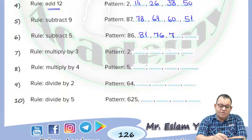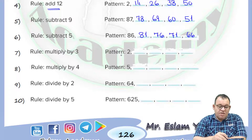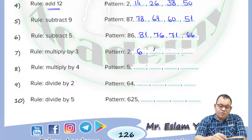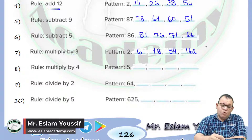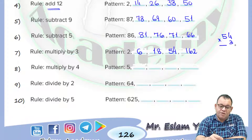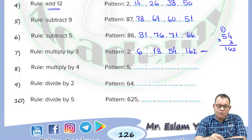In question number 7 we need to multiply by 3. I will start with 2 — that is the first term. If you multiply it by 3 the answer will be equal to 6. 6 multiplied by 3 equals 18. 18 multiplied by 3 equals 54. 54 times 3 equals 162. So each time I will multiply by 3. To find 162 from 54: 3 times 4 equals 12, write 2 and carry 1. 3 times 5 equals 15, plus 1 equals 16. And that's how we find 162.